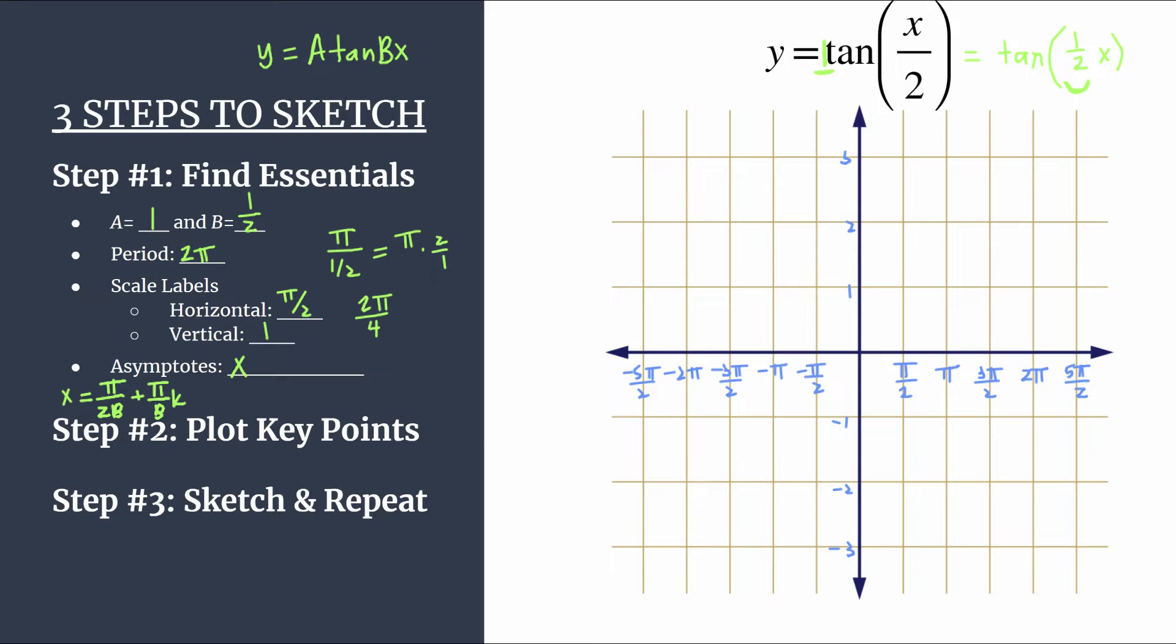So let's go ahead and find our asymptotes equation from that formula. So if you substitute in b is 1 half, you get x equals pi over, so 2 times 1 half is just 1. And then you have plus pi over b. So pi over 1 half is just 2 pi. And that makes sense. This last part should always be plus the period that you found. So that's the period you found up here times k. So that's one way you can go about it. If you like the formula, great. Go for it that way.